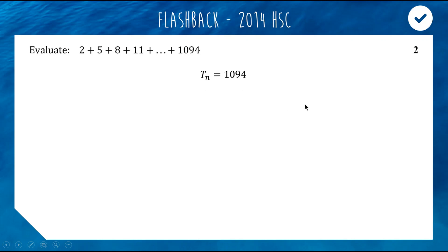We have an expression to find the nth term of an arithmetic series — it looks like this. a is our starting term, n is our number, and d is our consistent difference between each term.